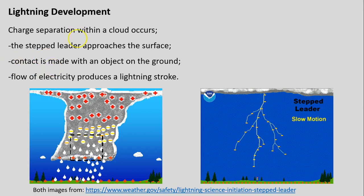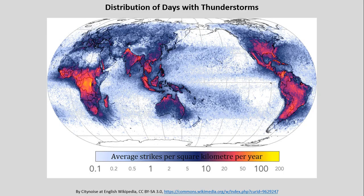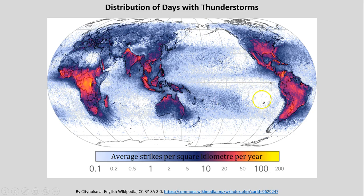Tied to thunderstorms is lightning. You can read through the details at your leisure in the provided lecture slides. Looking at the distribution: Uganda and Kampala — the central part of Africa — has a very large number of average lightning strikes per year, tied to those thunderstorms along the intertropical convergence zone. You really see that along the ITCZ generally, where it travels near the equator. We also see lots of lightning strikes in the more humid southern and eastern parts of the United States.